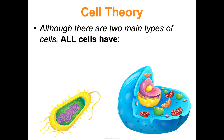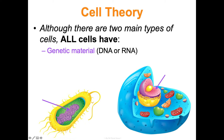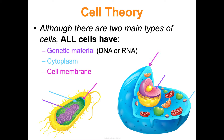Although there are two main types of cells, all cells share four things. They all have genetic material — either DNA or RNA. In prokaryotes it floats in the cytoplasm; in eukaryotes it's in the nucleus. They all have cytoplasm — the fluid inside the cell where biochemical reactions occur. They all have a cell membrane. And they all have ribosomes — ribosomes make proteins, and proteins run your cells, making them incredibly important.